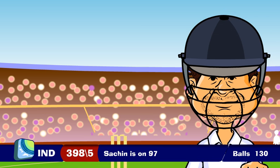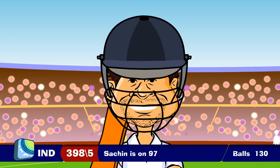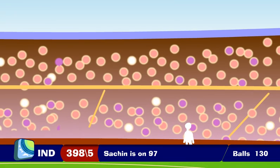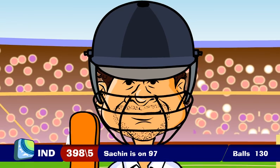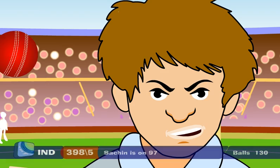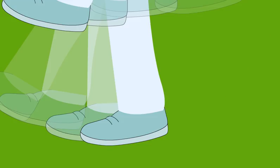Satchin has scored 97 runs. What a fantastic knock. Just listen to the crowd. What will Satchin do now? The big Australian fast bowler runs in.